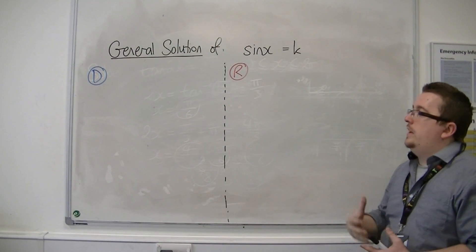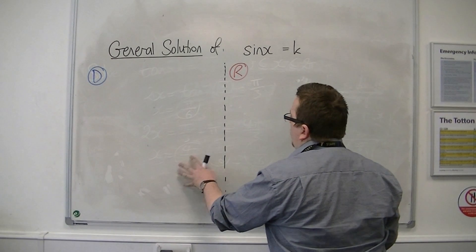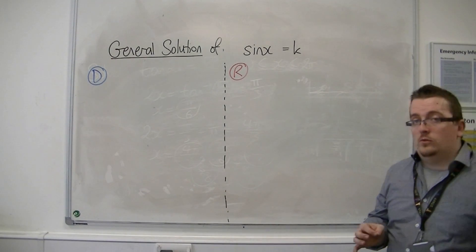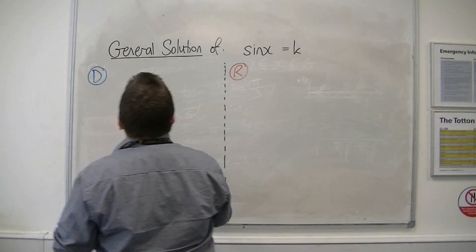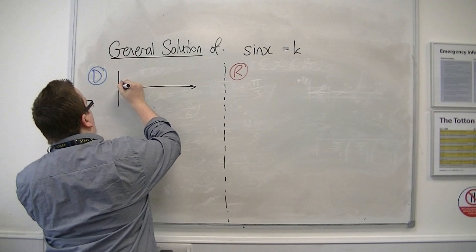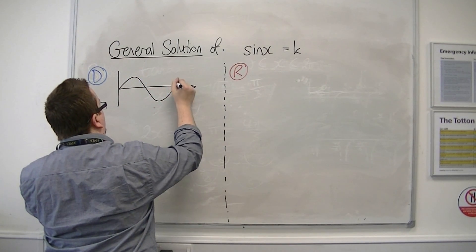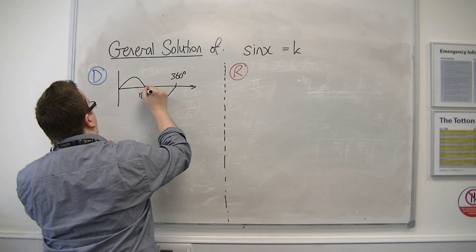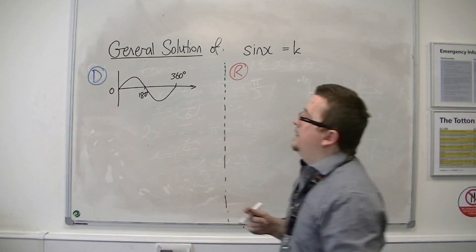I'm going to do this in two different ways: in degrees and in radians. The first thing to do is to sketch sin. So in degrees, sin looks like this, between 0 and 180.